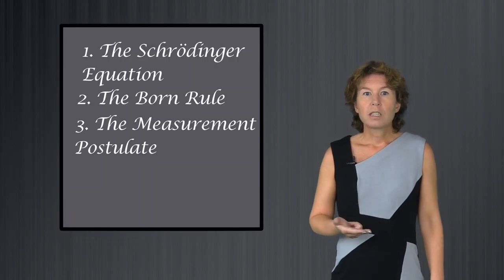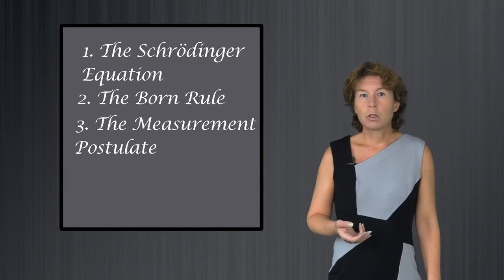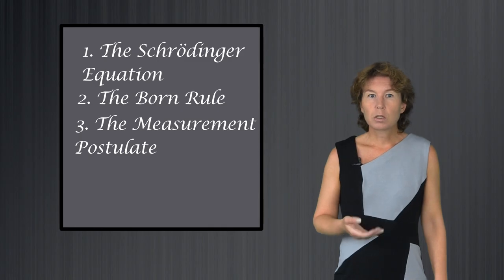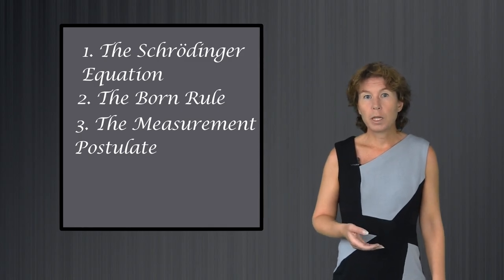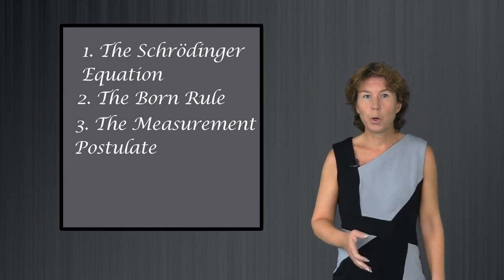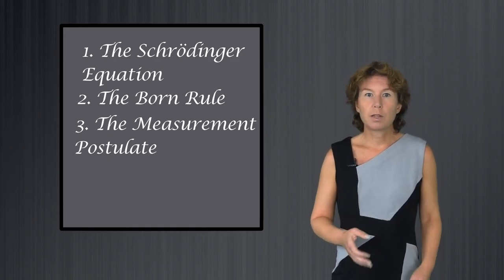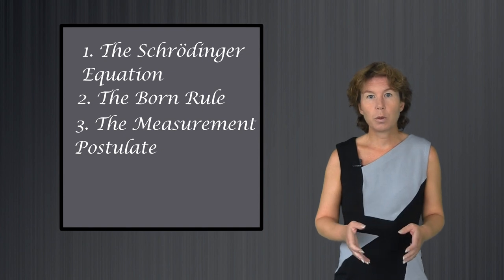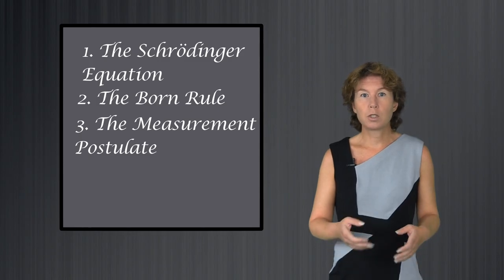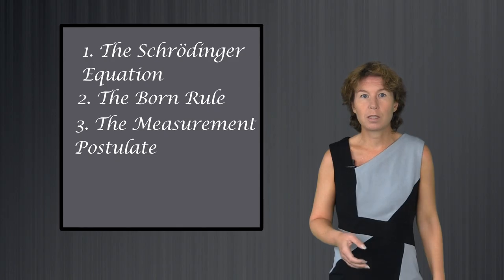And third, there is the measurement postulate, sometimes called the update or collapse of the wave function. This postulate says that after you have made a measurement, the probability of what you have measured suddenly changes to 1. This, I have to emphasize, is a necessary requirement to describe what we observe. I cannot stress this enough because a lot of physicists seem to find it hard to understand. If you do not update the wave function after measurement, then the wave function does not describe what we observe.